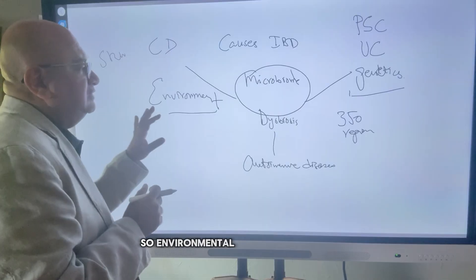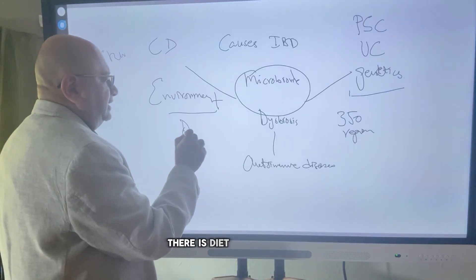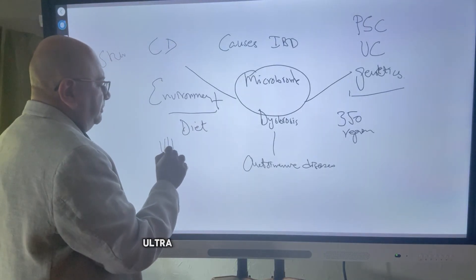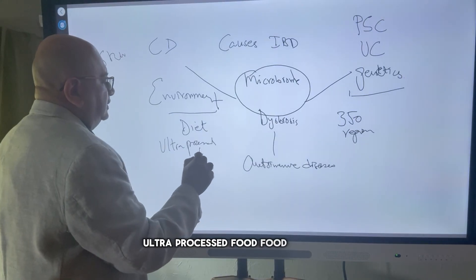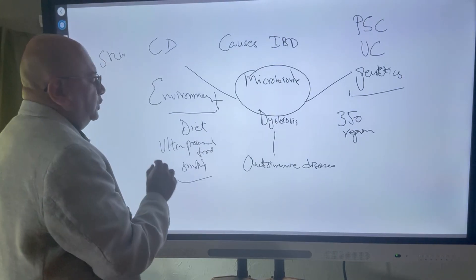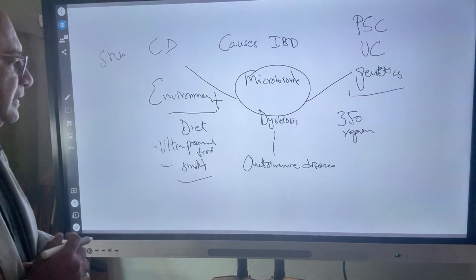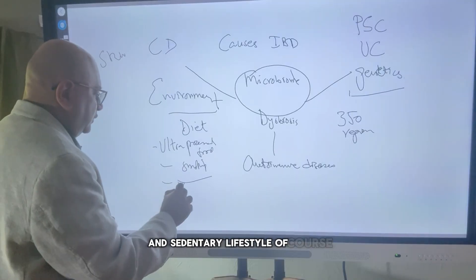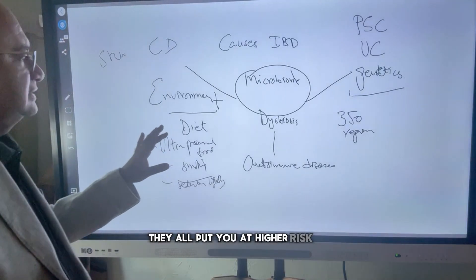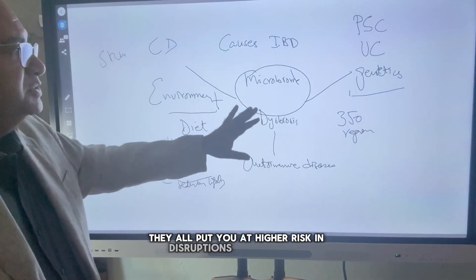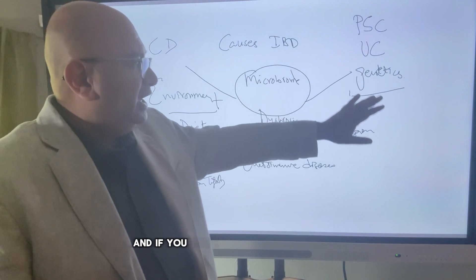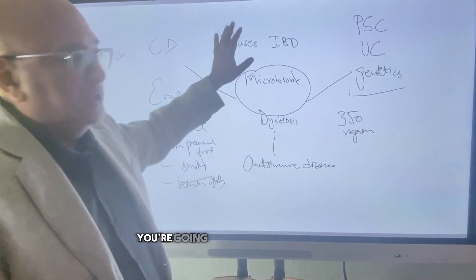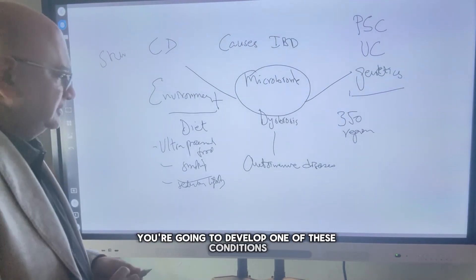As for environmental factors, there is diet — a very poor diet, ultra-processed food — smoking, and of course a sedentary lifestyle. These all put you at high risk by causing disruptions in the microbiome. And if you have the genetic predilection, you are going to develop one of these conditions.